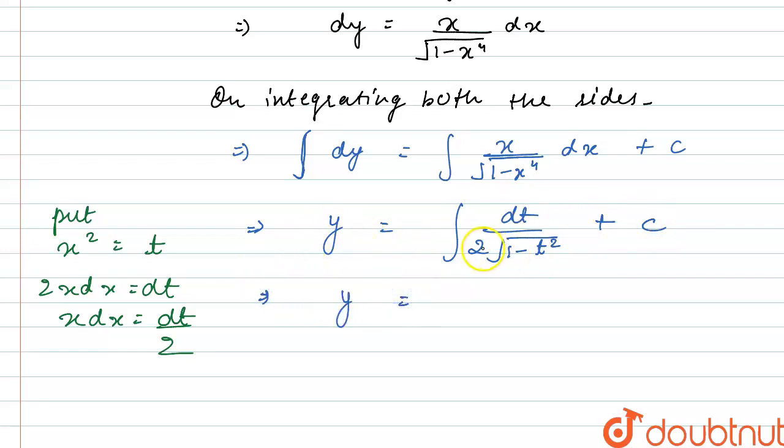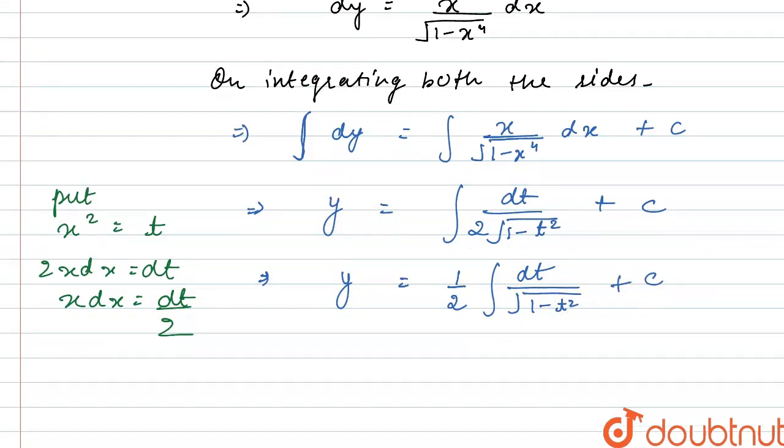Now this will become y is equals to 1 by 2, I can take out of this integration since it's a constant. This will become integral dt divided by root over of 1 minus t square plus c.